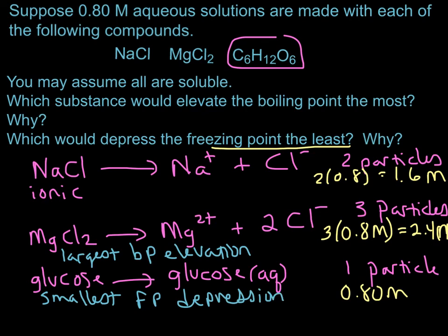So sodium chloride would be intermediate for both of those. It would elevate the boiling point more than glucose in solution, but less than magnesium chloride. And it would depress the freezing point less than magnesium chloride, but more than glucose.